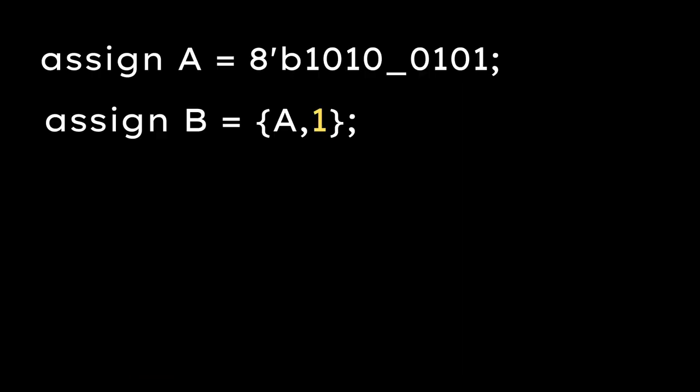Now, this case is very important. Here, B is concatenation of A and 1. So, what will be B? Please comment down your answer before going any forward in this discussion.